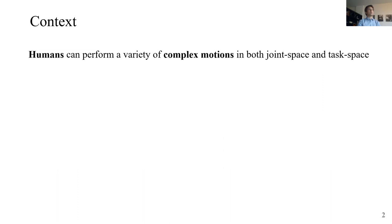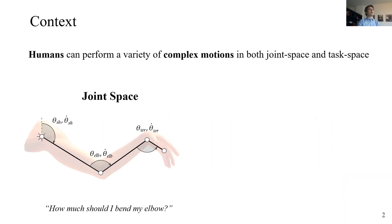First of all let's think about how we are made. We can perform a lot of complex movements in joint space and task space which means that on one side we can control how much or how fast we want to bend our elbow or our wrist and on the other side we can also perform arm reaching tasks just by controlling the position of our end effector.